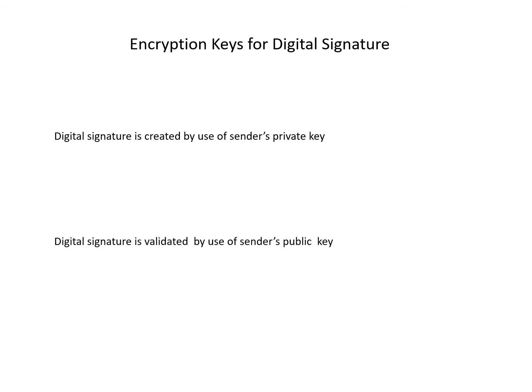The sender's private key provides the authentication and integrity of the message. Digital signature is validated by use of the sender's public key. If someone wants to validate this digital signature, they can use the corresponding public key of the sender to confirm the genuineness of the digital signature. This process of creation is known as encryption and validation is also known as decryption.